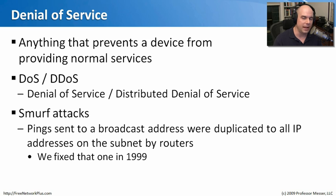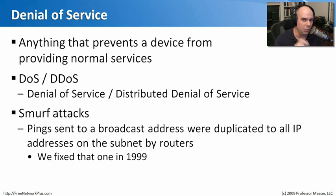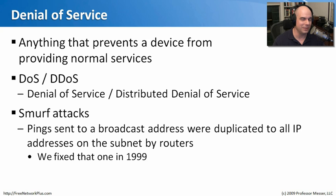One very old style of denial of service was something called a smurf attack. This involved sending a specialized ping message to a broadcast address. If a router saw a ping going to a broadcast address, it would duplicate that ping to everybody on the network. So you'd send one packet in, and if there were 200 people on the network, you just sent that packet to 200 people without sending it out 200 times. You could send 10 packets in and suddenly send 20,000 packets. This doesn't work anymore — we fixed that in 1999 — but it's a classic example of how attacks could bring down networks.